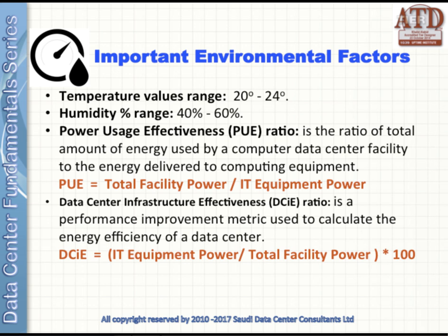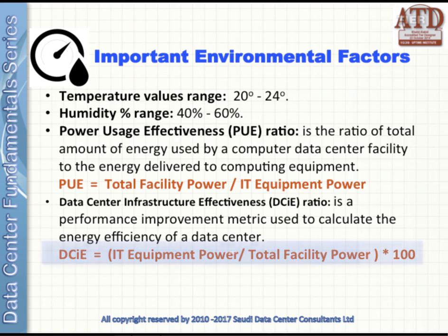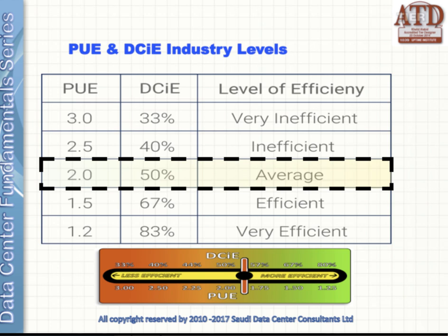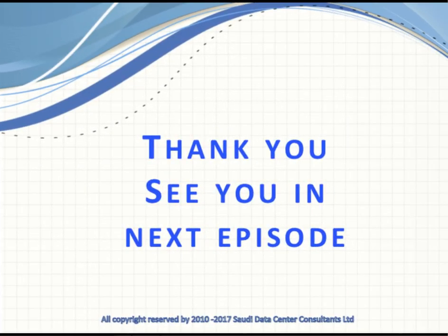You should pay attention to the following environmental factors: temperature, with a value range of 20 to 24 degrees Celsius; humidity percentage, which should be between 40 to 60 percent. Recently, PUE ratio has become an important measure for data center power efficiency, as it measures total power consumed by the facility to total power delivered to the data room. Finally, DCIE can be calculated to measure the energy efficiency of the data center. In this table you can see the industry standard levels for those factors — the aim is to be as efficient as possible. Thank you for watching and see you in the next episode.